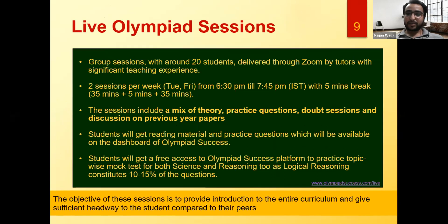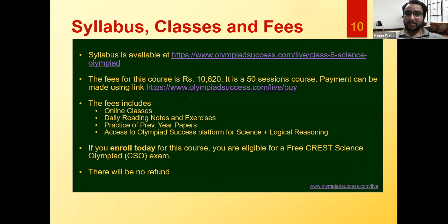About this batch: there will be 20 students in a batch and classes will be conducted on the Zoom platform. There will be two sessions per week - Tuesday and Friday - with timing 6:30 PM to 7:45 PM. Session duration is 75 minutes with a five-minute break in between. The session includes a mix of theory, practice questions, and doubt sessions. We will also discuss previous year papers. Students will get reading material and practice questions on the Olympiad Success platform, plus free access for topic-wise mock tests of science and reasoning.